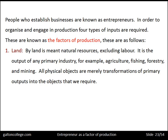All physical objects are merely transformations of primary outputs into the objects that we require. Agriculture gives us food, fishing gives us food, forestry gives us wooden products and heating and all the ways we use timber and wood, and mining gives us different types of extractive products that we use around the house or in industry.